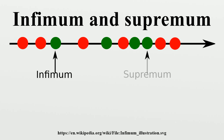Existence and uniqueness: Infimum and supremum do not necessarily exist. However, if an infimum or supremum does exist, it is unique. Consequently, partially ordered sets for which certain infima are known to exist become especially interesting. For instance, a lattice is a partially ordered set in which all finite subsets have both a supremum and an infimum, and a complete lattice is a partially ordered set in which all subsets have both a supremum and an infimum. More information on the various classes of partially ordered sets that arise from such considerations are found in the article on completeness.